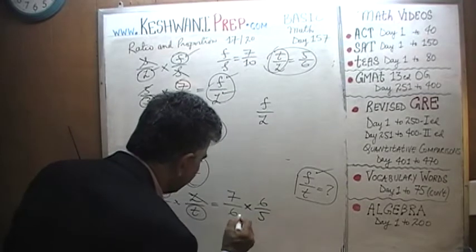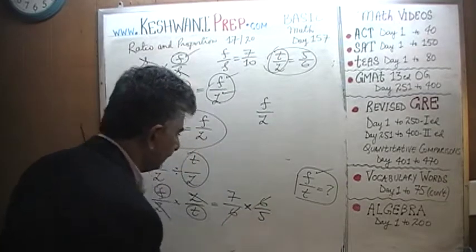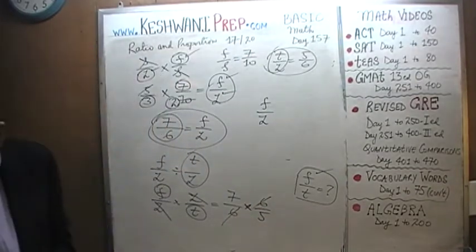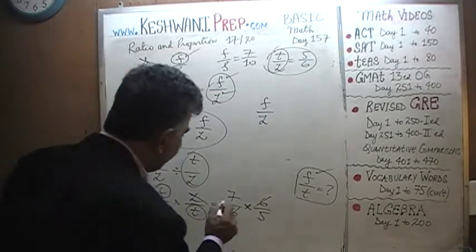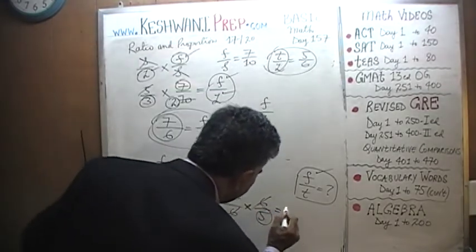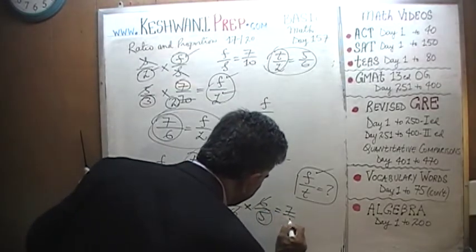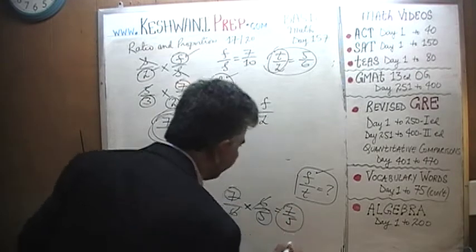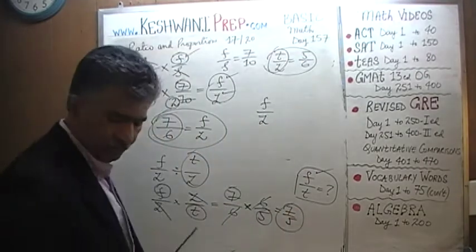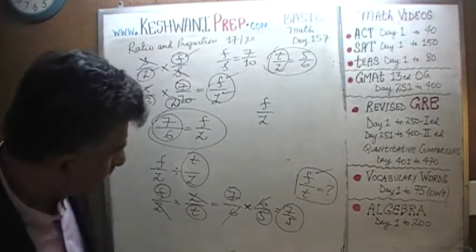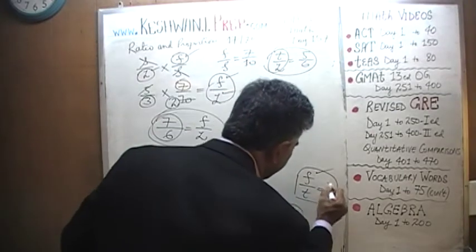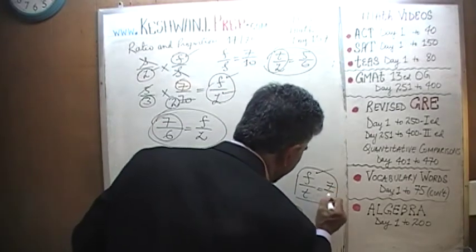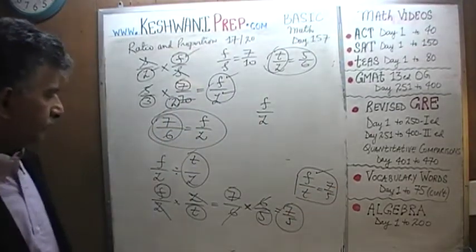Oh, this is very nice — this is very simple. The 6s cancel, and we are done. The answer is 7 to 5. The ratio of 1st graders to 3rd graders that we were looking for turns out to be 7 to 5.